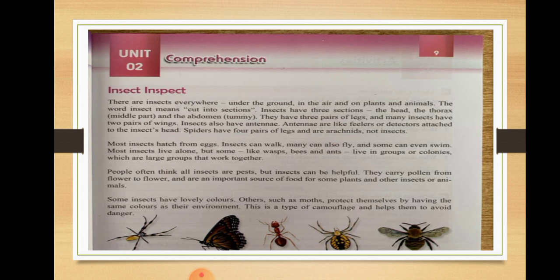Wasps, bees, and ants live in groups or colonies — large groups — and work together. People often think all insects are pests, meaning harmful insects, but no — some insects can be very helpful. They carry pollen from flower to flower and are an important source of food for some plants, other insects, and animals.